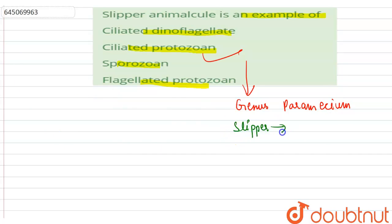The term 'slipper' is used because of their shape - their shape is like a slipper. And the term 'animalcule' represents microscopic organisms.